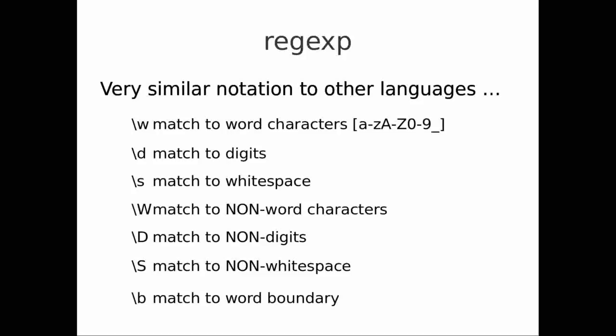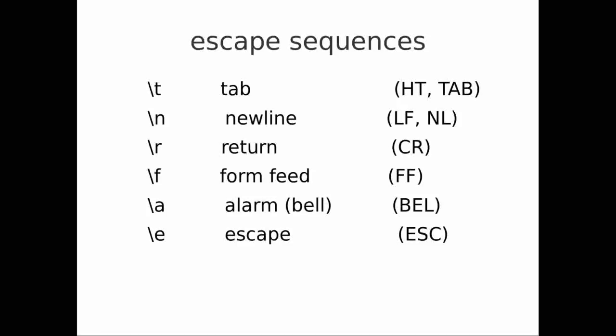There are also escape sequences for special characters. To match a tab, we use \t — we've seen that when splitting lines in a previous lecture. \n is for newline and \r is for carriage return. There are some other sequences like form feed and alarm, which we'll use less frequently.